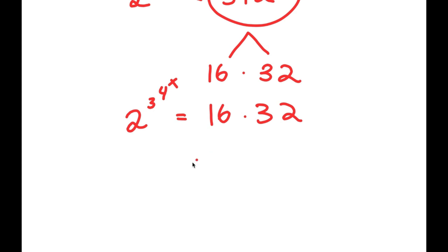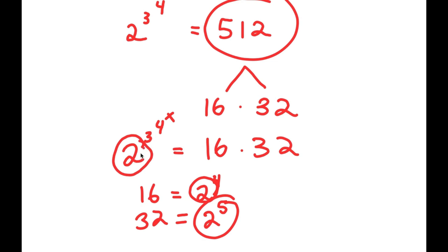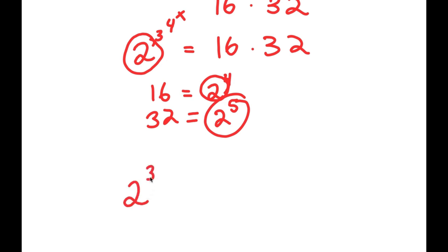Now 16 is equal to 2 to the power of 4, and 32 is equal to 2 to the power of 5. So this is why we wrote 512 as 16 times 32, because now I have 2 to the power of 4 times 2 to the power of 5. Notice how we have another base of 2 over here, so now I can rewrite this as 2 to the power of 3 to the power of 4 to the power of x is equal to 2 to the power of 4 times 2 to the power of 5.